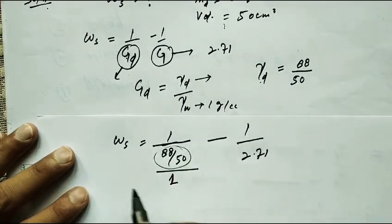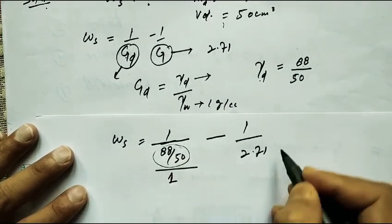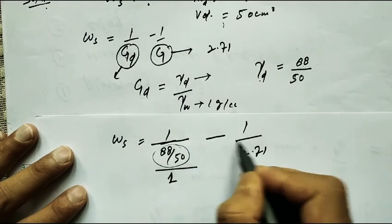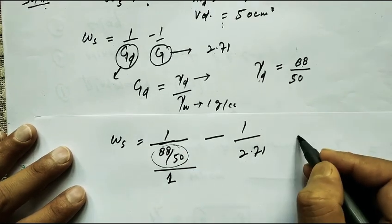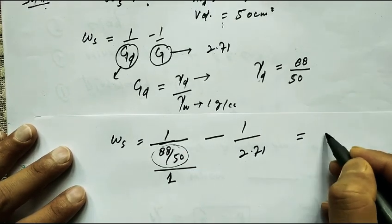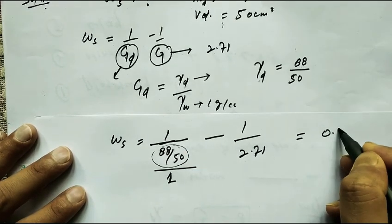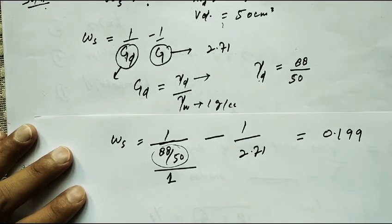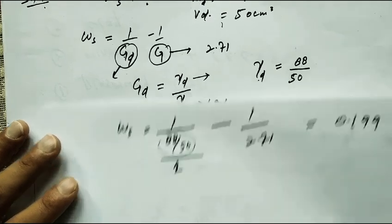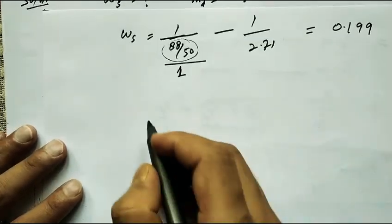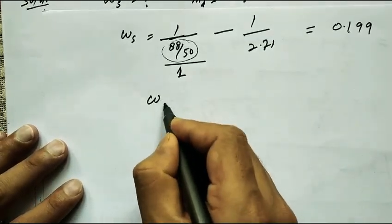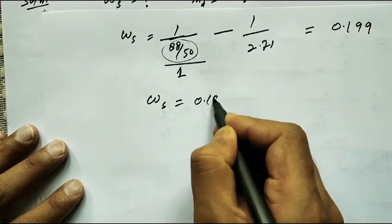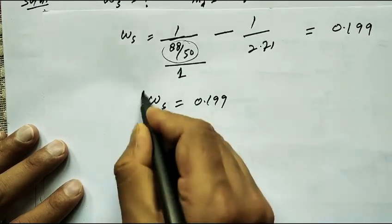Solving this, the answer comes out to approximately 0.199. So the shrinkage limit WS is finally equal to 0.199.